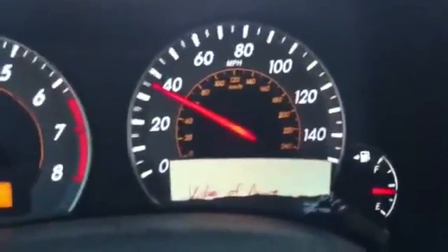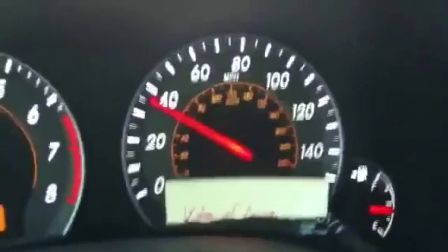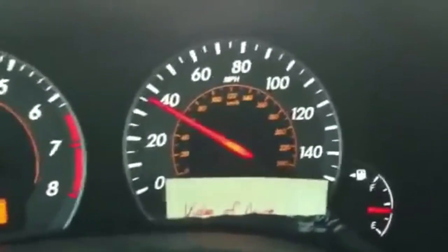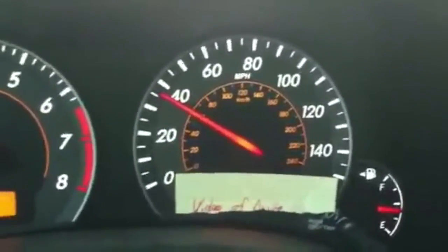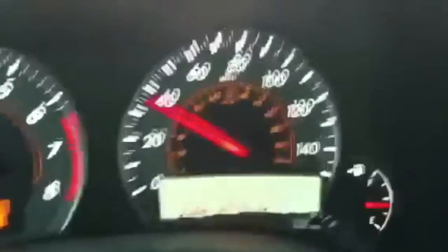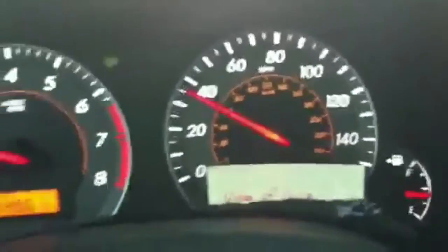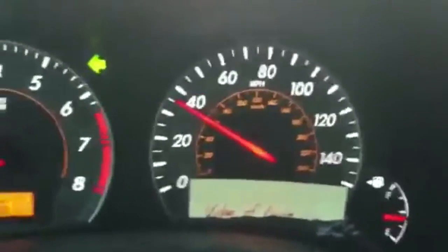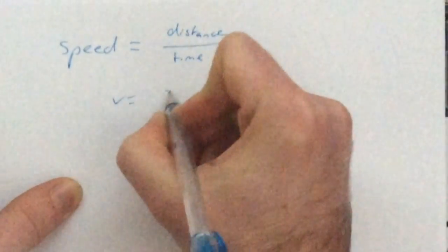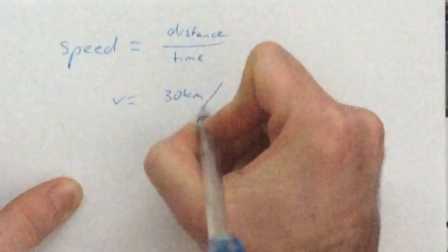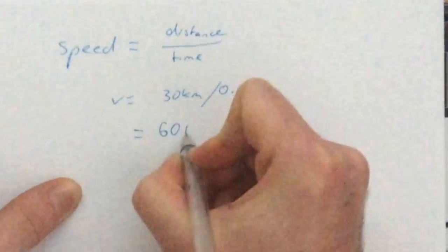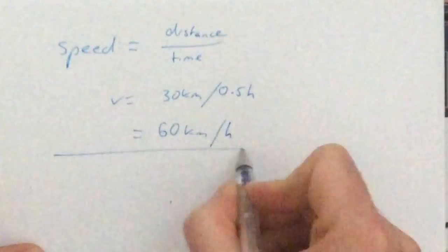It is calculated as displacement over time. So if we look again at my trip to school — when I drove 30 kilometres to school, it takes me 30 minutes, or half an hour. Therefore, my speed can be calculated as 30 kilometres divided by half an hour, which equals 60 kilometres per hour.